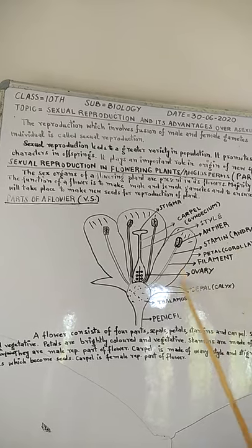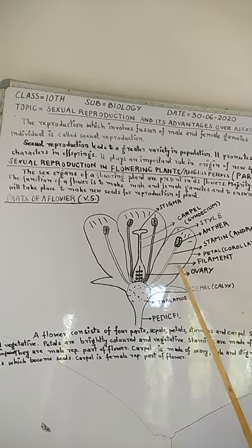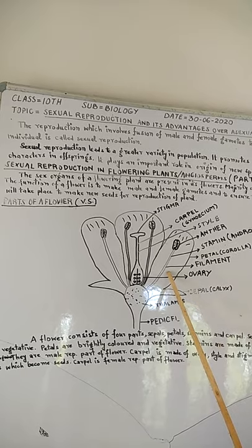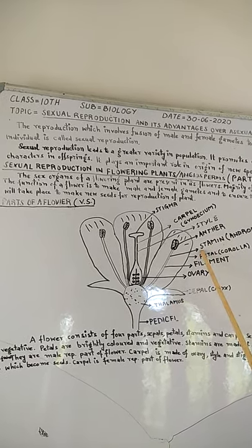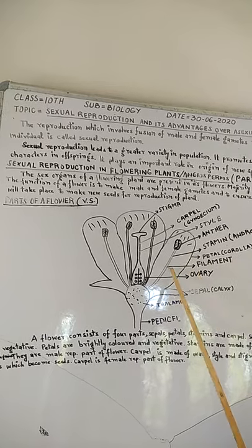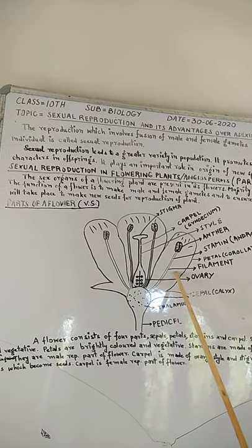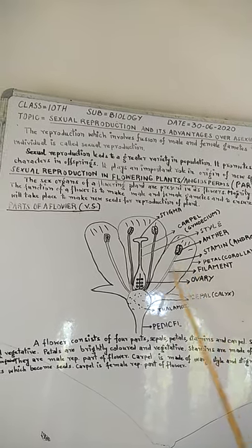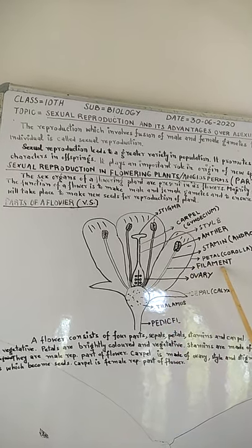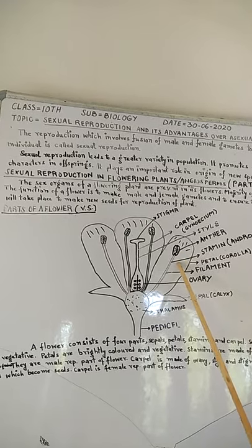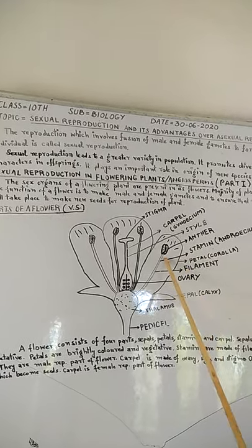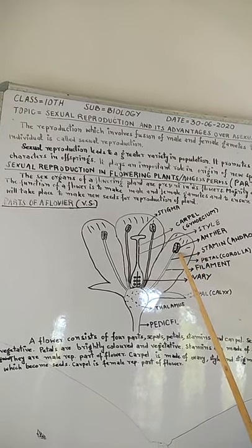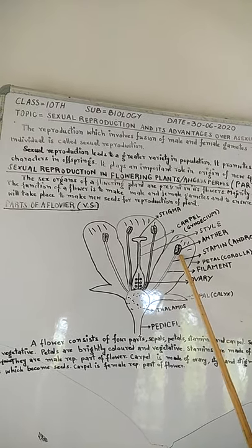These two parts are vegetative parts. Then come the reproductive parts. The first reproductive part is stamens, which are collectively known as androecium. Each stamen consists of two parts: the stalk, which is known as the filament, and on the top of the filament it bears the anther, which contains pollen grains — the male reproductive gametes.